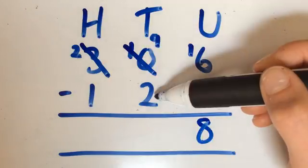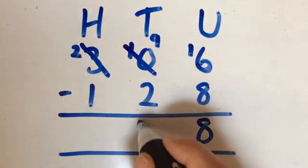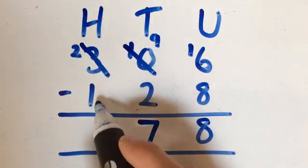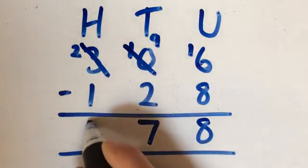So 16 take away 8 is 8. 9 lots of 10 take away 2 lots of 10 is 7. 7 lots of 10. And 2 100 take away 100 is 100.